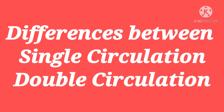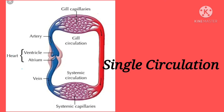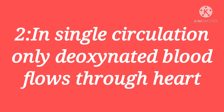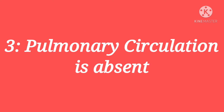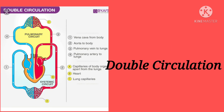In this video we will discuss the differences between single circulation and double circulation. Single circulation means flow of blood through the heart only once for completing one circulation. In single circulation, only deoxygenated blood flows through the heart. Pulmonary circulation is absent in single circulation. Single circulation is seen in fishes, and the heart contains only two chambers.